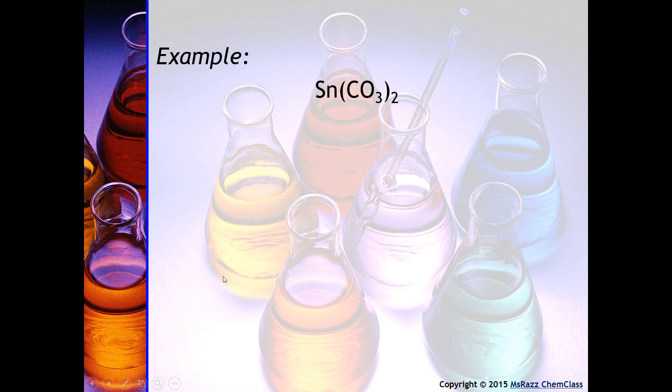Here's another example. Again, if you notice where tin is on your periodic table, you'll see that it has more than one possible charge. Because it has more than one possible charge, it means that it needs a Roman numeral. So in order to figure out what the Roman numeral is, we will use the charge on the carbonate. Carbonate is minus two, and notice there are two of them, so what that means is on the right hand side it is going to be equal to minus four.